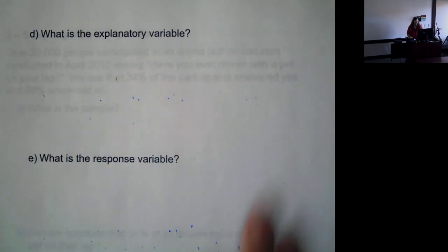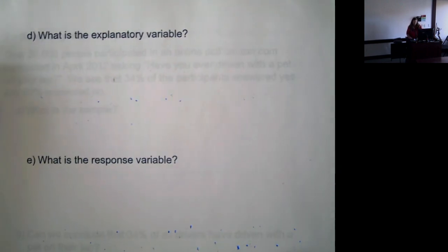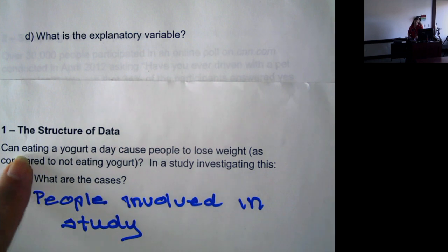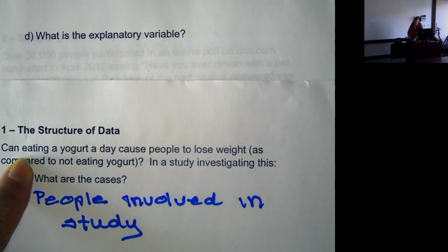So now we have other information we can get from this data. The explanatory variable - remember, the explanatory variable is what you're using to decide if something happens or to predict something. So in this case, the question asks: can eating a yogurt a day cause people to lose weight?